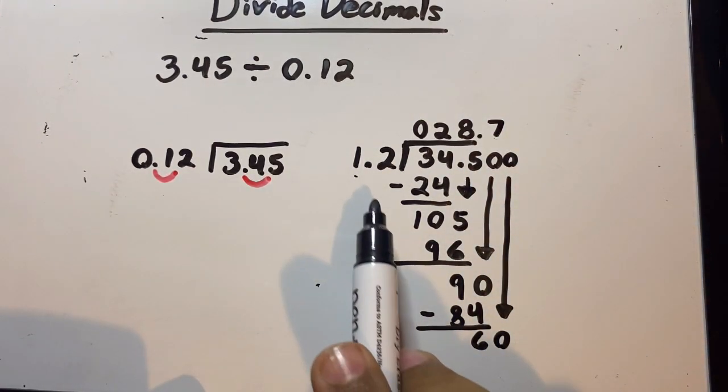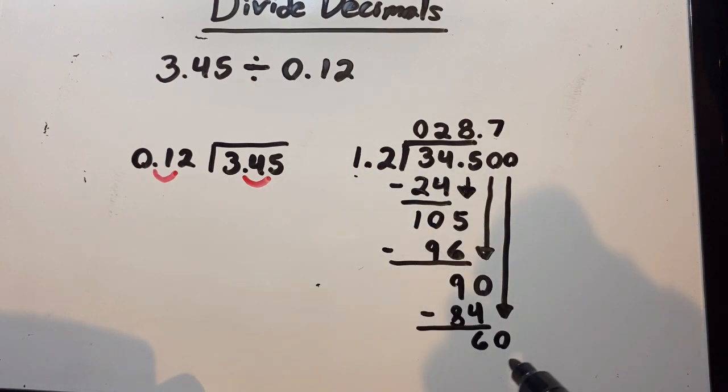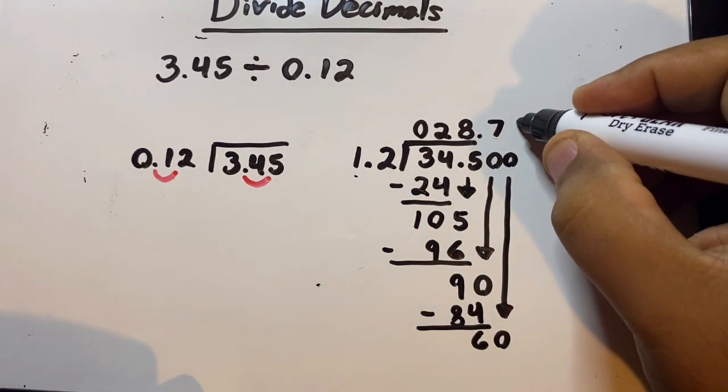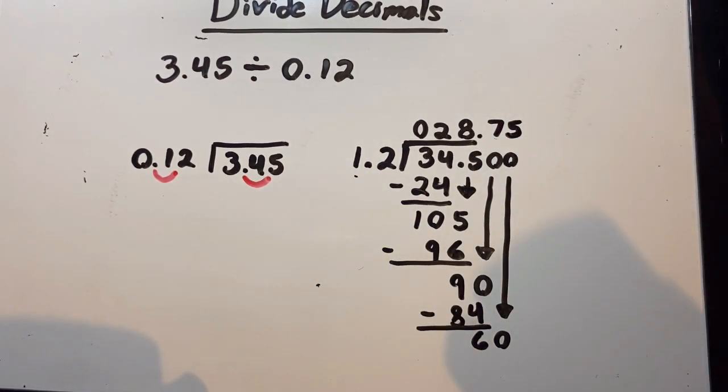If you know your multiplication tables, 12 goes inside 60 five times. Five times 12 is 60.